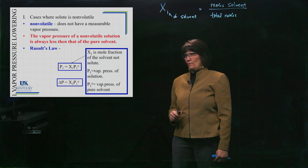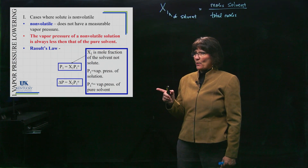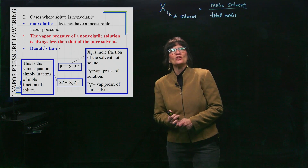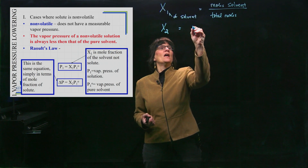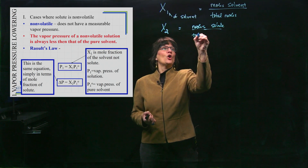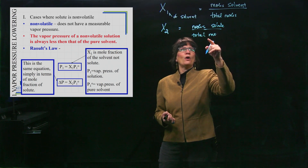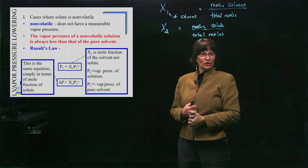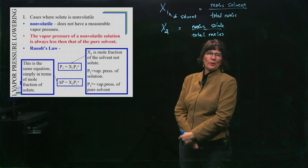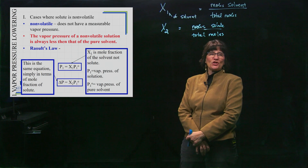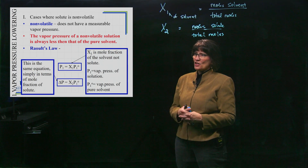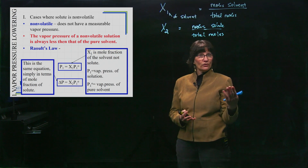There is another way of expressing Raoult's Law using X₂, the mole fraction of the solute instead. In that form, X₂ equals moles of solute over total moles. Both equations are the same, just looking at it differently — they are interchangeable. I've never found a case where it's easier to use the bottom form. If a question asks how much was the vapor pressure lowered — the delta P — you can still use the top equation, solve for P₁, and subtract it from the pure solvent value.